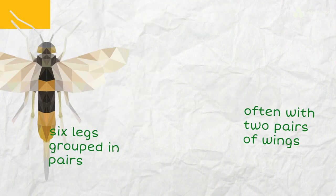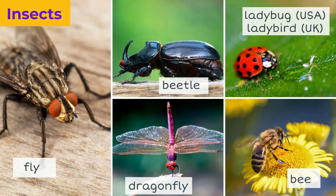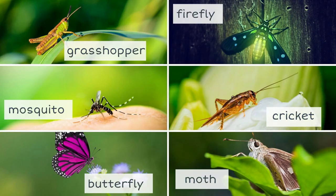An insect is a small animal that has six legs, grouped in pairs, and often with two pairs of wings. Examples of insects are a fly, a beetle, a ladybug in the USA or a ladybird in the UK, a dragonfly, a bee, a grasshopper, a mosquito, a butterfly, a firefly, a cricket, a moth.